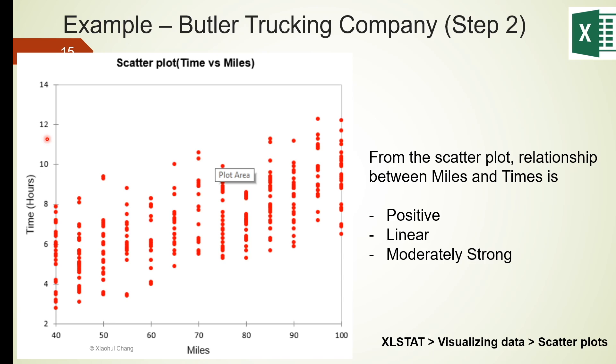So the relationship is positive. The pattern can be approximated using a straight line, which means the linear relationship between them is indeed valid. We also noticed that observations scattered somewhat closely around this line. So the relationship is moderately strong. In conclusion, the relationship between miles and time is indeed linear.